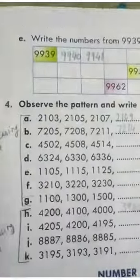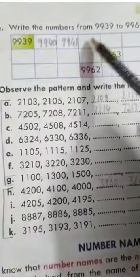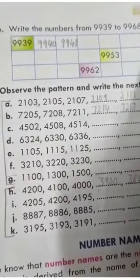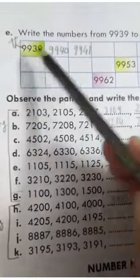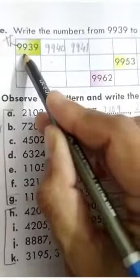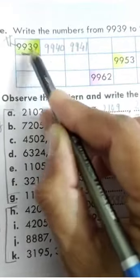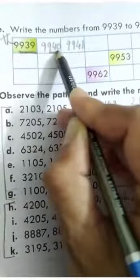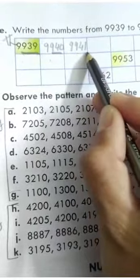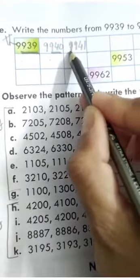Part E: write numbers from 9939 to 9968. The digit under place value 1000 is 9, so it will remain on its place. Only the digits under place values 1s and 100 will change. So next after 939 is 940, then 941 — but the digit 9 will remain on its place.